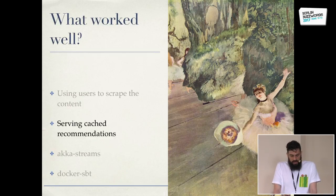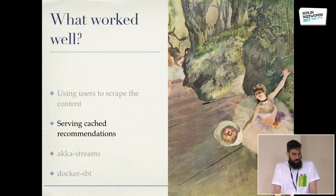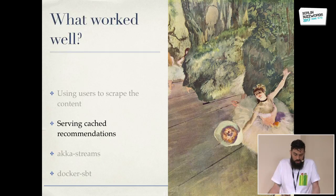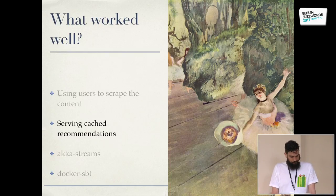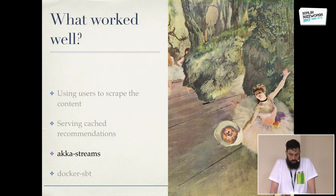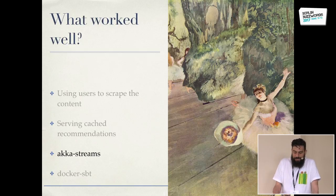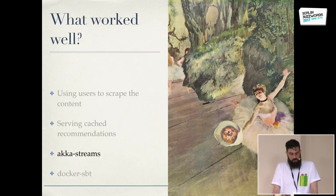The second big win was realizing we could use an object store to save the recommendations. This saved us a lot of stress, since we only had to guarantee the object store is running — which in our case was a service on AWS, so we didn't have to do anything. Akka Streams is a great example of a reactive streams implementation. It maps very nicely into the mental model of stream processing and transformations, which greatly increased our productivity. Another advantage of Akka Streams is the async abstraction that lets you write the application as you normally would, but still leverage all available cores.